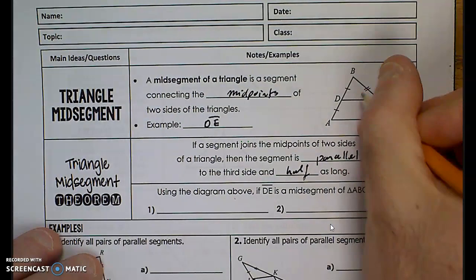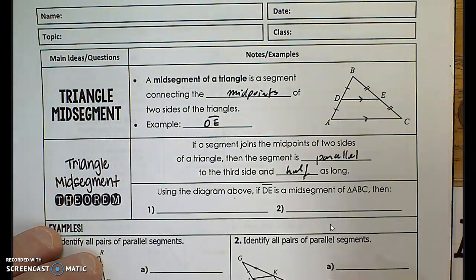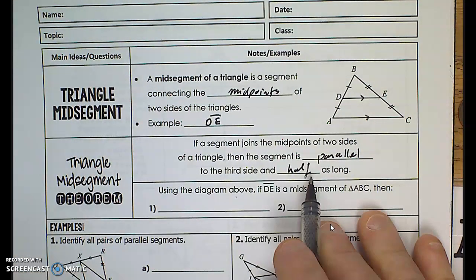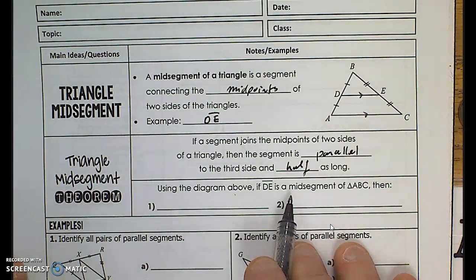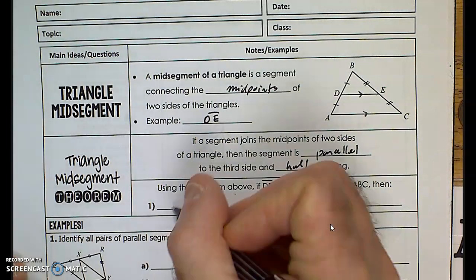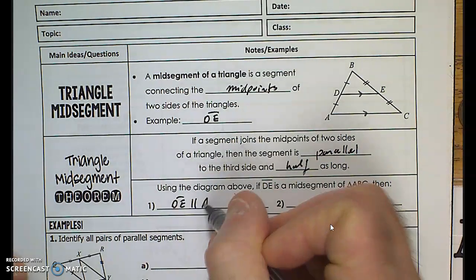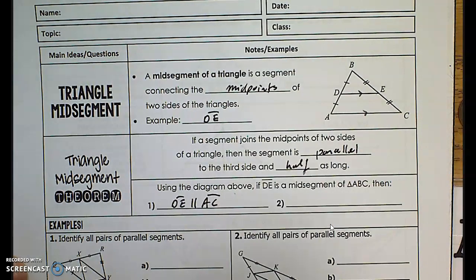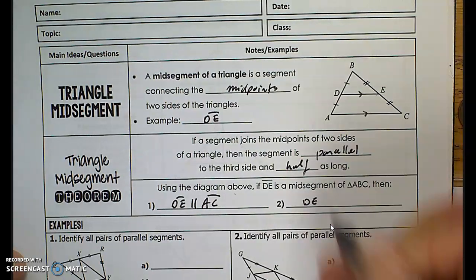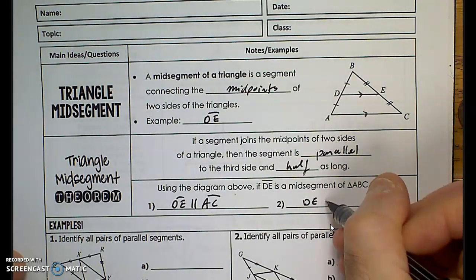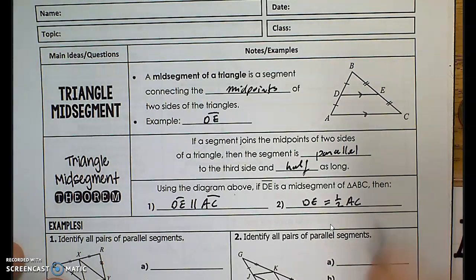So it's parallel — I'll put a little arrow down there to indicate they are parallel. And half as long. Using the above diagram, if DE is the mid-segment of triangle ABC, then line segment DE is parallel to line segment AC, and the distance from D to E is half the distance from A to C. I'm not putting any line on top because I'm indicating the distance.